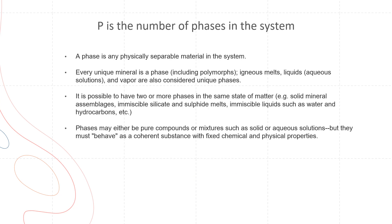When we talk about phases, a phase is any physically separable material in the system. So every unique mineral is a phase, and this includes polymorphs. As we've looked at in our lectures, we've had the polymorphs of Al2SiO5, where we have kyanite, andalusite, and sillimanite. Each one of these would count as its own phase.